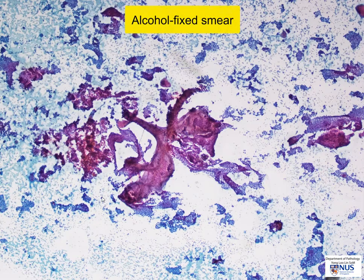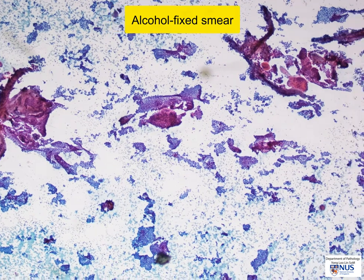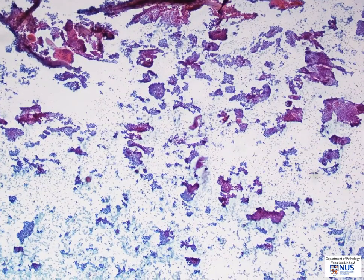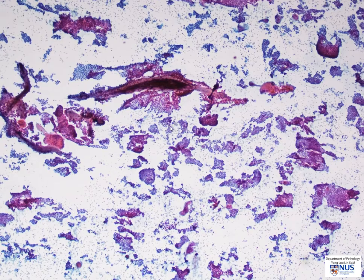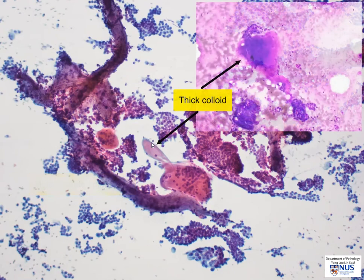This is the alcohol-fixed smear of another very classical case of PTC. Again, we can appreciate the marked cellularity of the sample. There are many sheets of neoplastic cells, some of them appearing a little bit folded. Again, we can appreciate these multinucleated giant cells. Over here, there is some thick colloid, often described as chewing gum or bubble gum colloid, which can be appreciated both in the air-dried and alcohol-fixed smears.